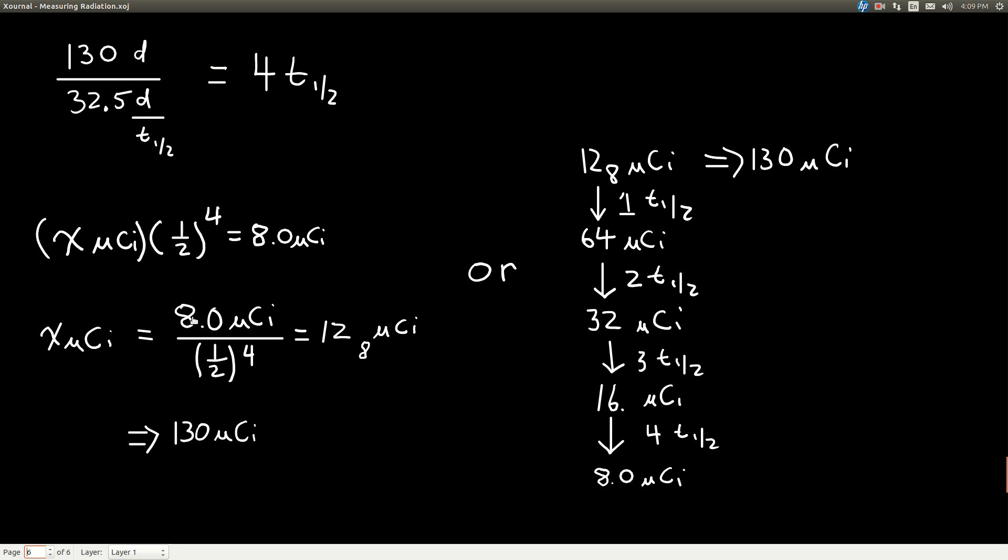So if we just divide both sides by one half to the fourth power, we can take 8 divided by one half to the fourth power. And you guys should put this in your calculator, make sure you get the same number. And this gives us 128 microcuries, which, with two sig figs because of this 8.0, rounds to 130 microcuries of initial activity.